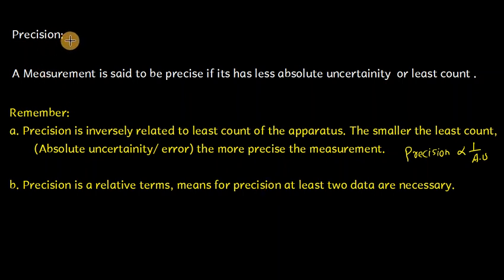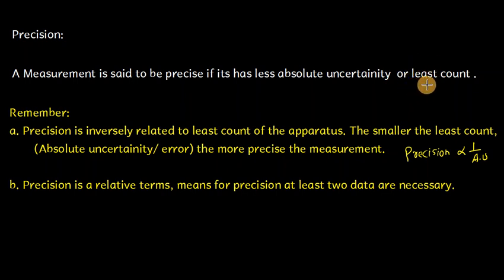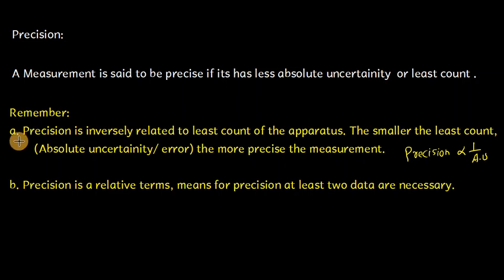Assalamu alaikum students. Today's topic is precision and accuracy. Precision: a measurement is said to be precise if it has less absolute uncertainty or least count. Precision is inversely related to least count of the instrument. The smaller the least count or absolute uncertainty, the more precise the measurement.